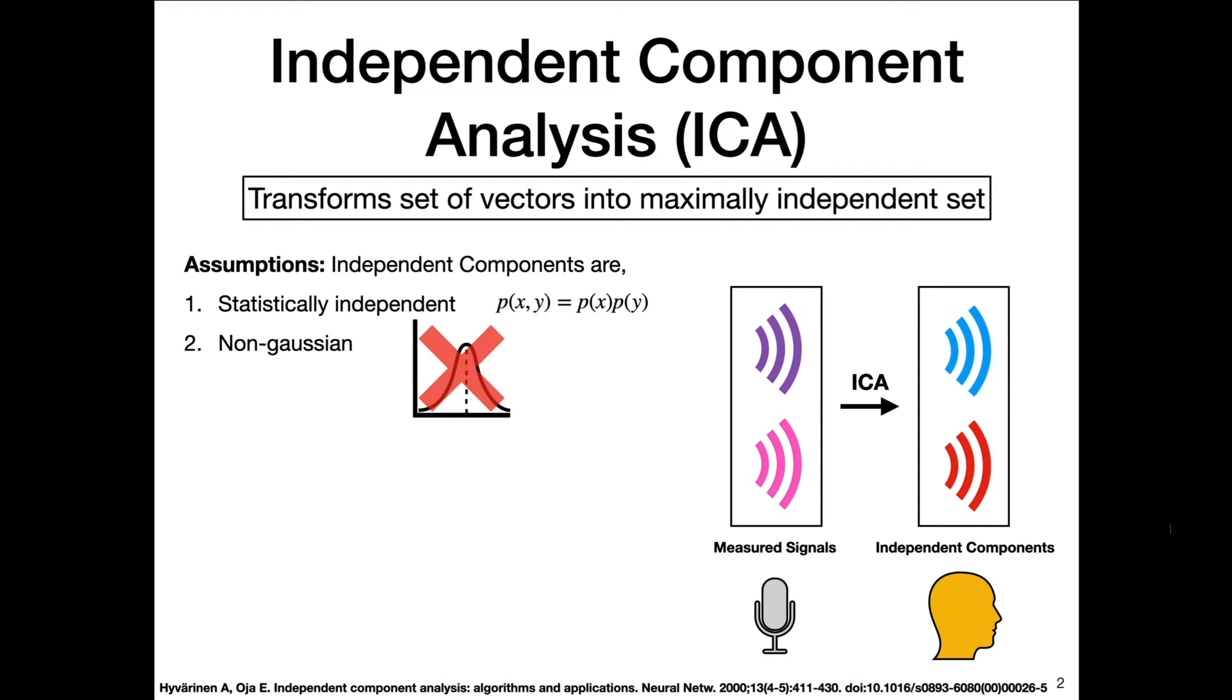We have our measured signals from your microphone example, and then the Independent Components, which is what your speakers are saying in the cocktail party problem. We can use our Independent Components, we can combine them in some way, to recreate our measured signals x. You can think of the Independent Components as being sources, hence that's why this vector is an s. They are sources of information or audio that are being combined in some way to generate what's being measured at your microphone.